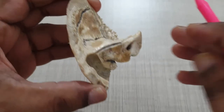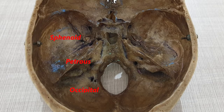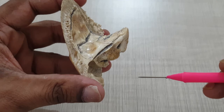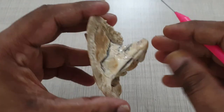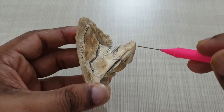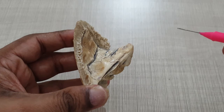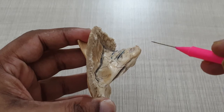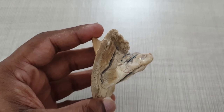Coming to the petrous part: in an articulated skull, it lies between the sphenoid bone anteriorly and the occipital bone posteriorly. It is pyramidal in shape, with a base and apex, and anterior, posterior, and inferior surfaces. It is directed medially and slightly forwards. The apex lies in the angle between the basilar part of the occipital bone and the greater wing of the sphenoid, forming the posterior margin of the foramen lacerum. The anterior surface forms part of the middle cranial fossa.